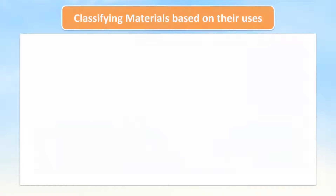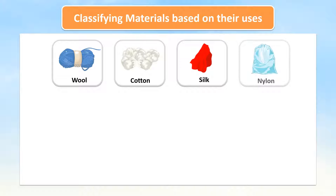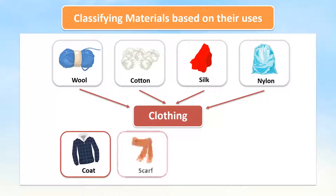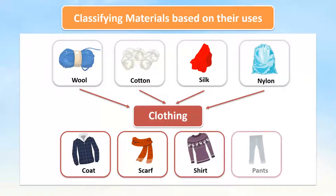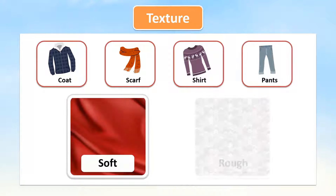Classifying materials based on their uses. Examples like wool, cotton, silk, and nylon. All of these materials can be used to make clothing such as coats, scarves, shirts, and pants. Clothing also differs from each other based on their texture — some are soft and some are rough.